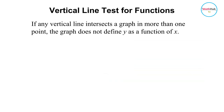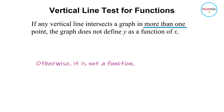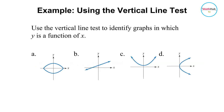Now we have the vertical line test for functions. To test whether a given graph is a graph of a function or not, all you need to do is apply the vertical line test. If you draw a vertical line anywhere on the graph and it intersects the graph at just one point, then that graph is a graph of a function. If it intersects the graph at more than one point, then that graph is not a function. We are going to use the vertical line test to identify graphs in which y is a function of x.